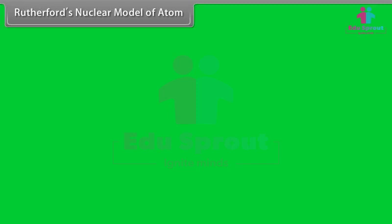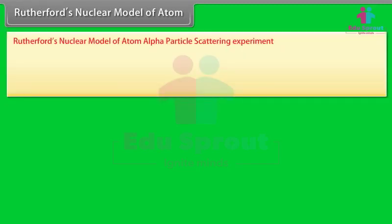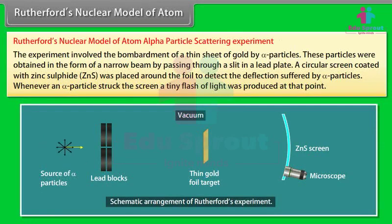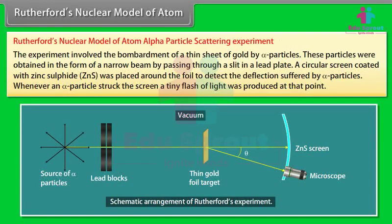Rutherford's nuclear model of atom — Alpha particle scattering experiment: The experiment involved the bombardment of a thin sheet of gold by alpha particles, obtained as a narrow beam through a slit in a lead plate. A circular screen coated with zinc sulfide (ZnS) was placed around the foil to detect deflections. Whenever an alpha particle struck the screen, a tiny flash of light was produced at that point.